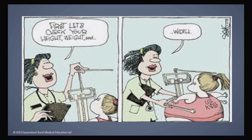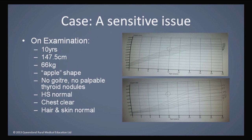On examination, she was 147.5 centimetres tall — on the 97th centile for height. Her weight was 66 kilos, which was well above the 99th centile. I regret I didn't have a BMI standardised chart to plot her on, and I also didn't take her blood pressure or pulse. She had a generally apple-shaped build. There was no goitre, and her thyroid was not palpable. Heart sounds were normal, chest was clear, and her hair and skin looked normal — she didn't appear clinically hypothyroid.